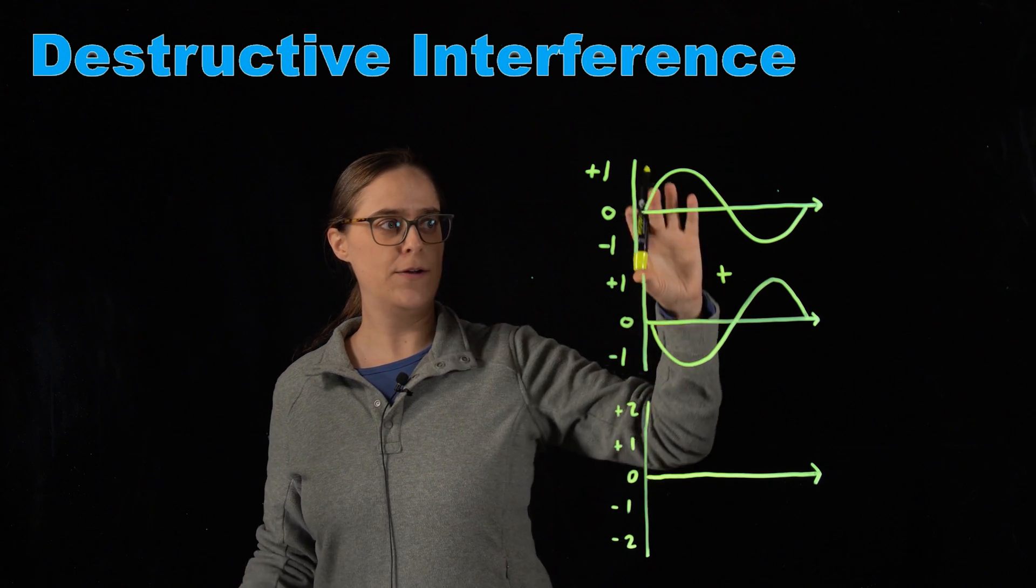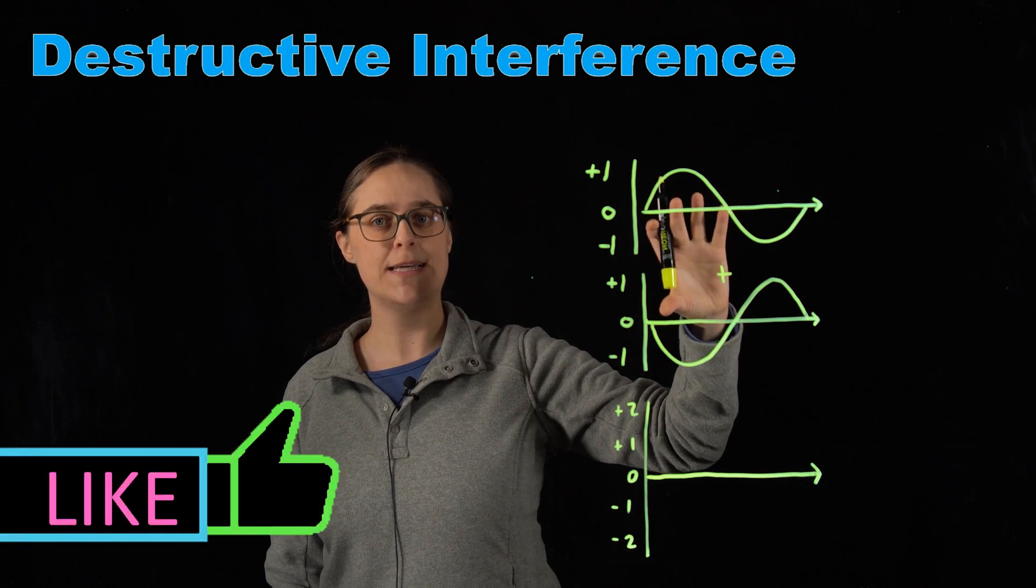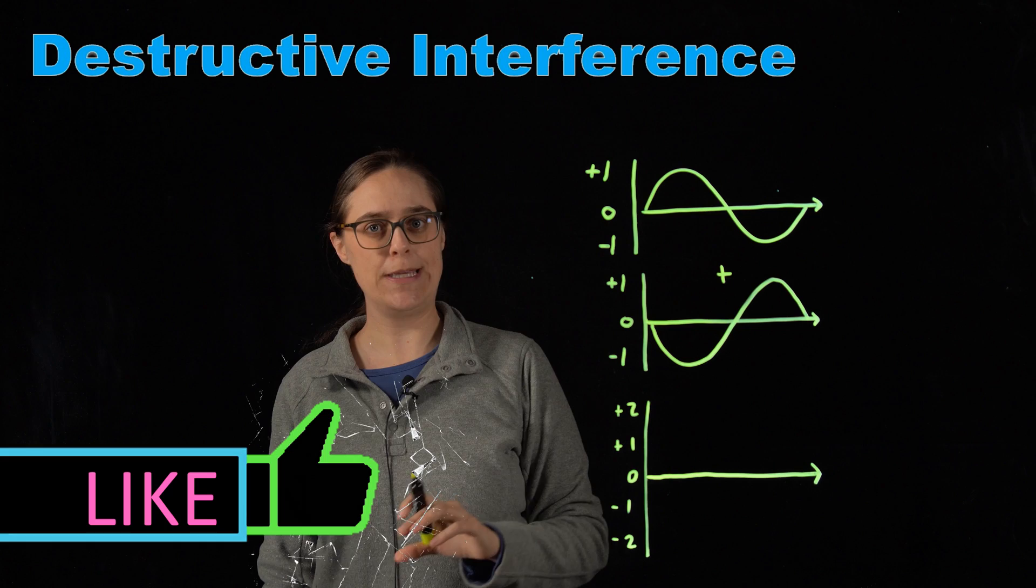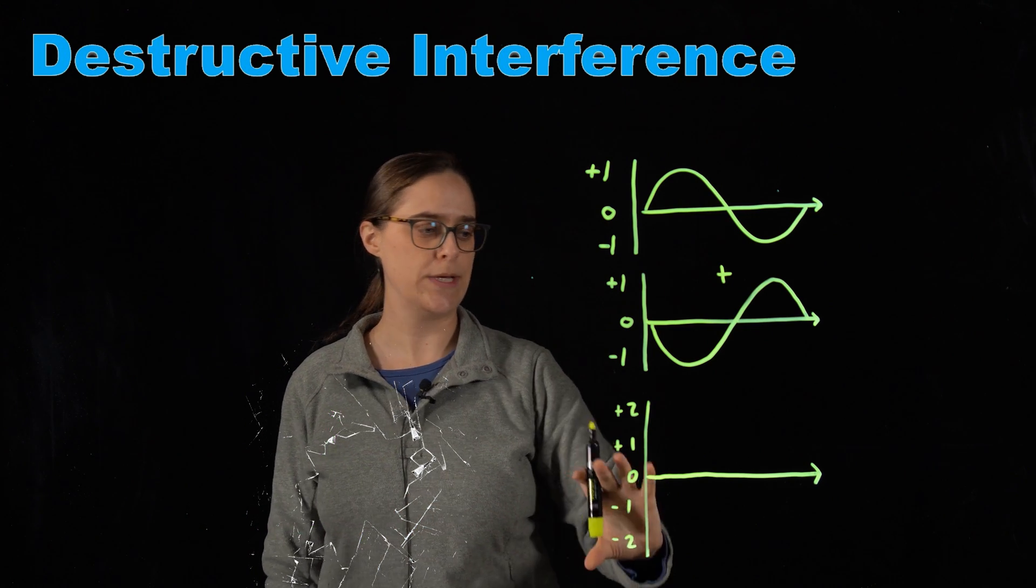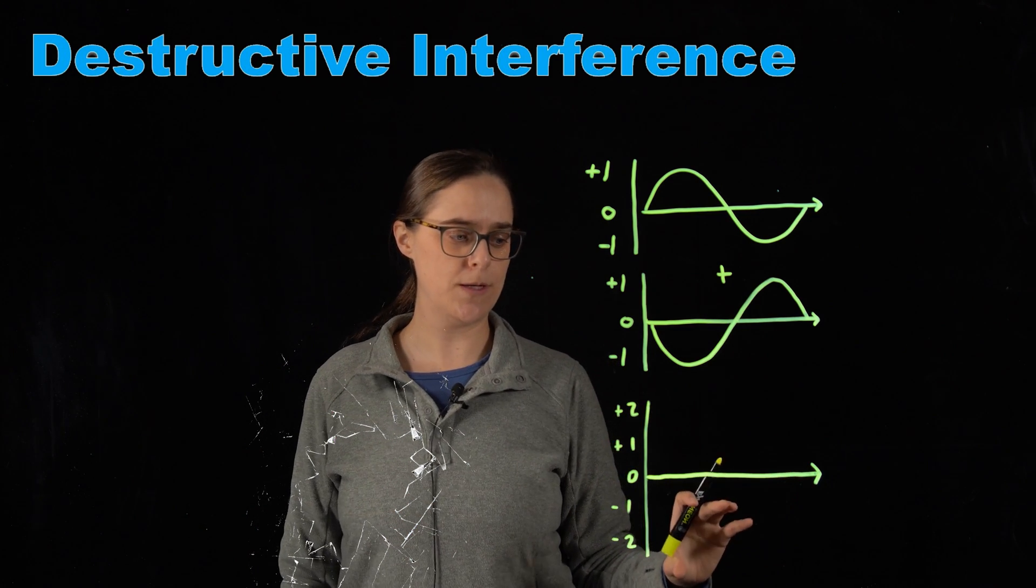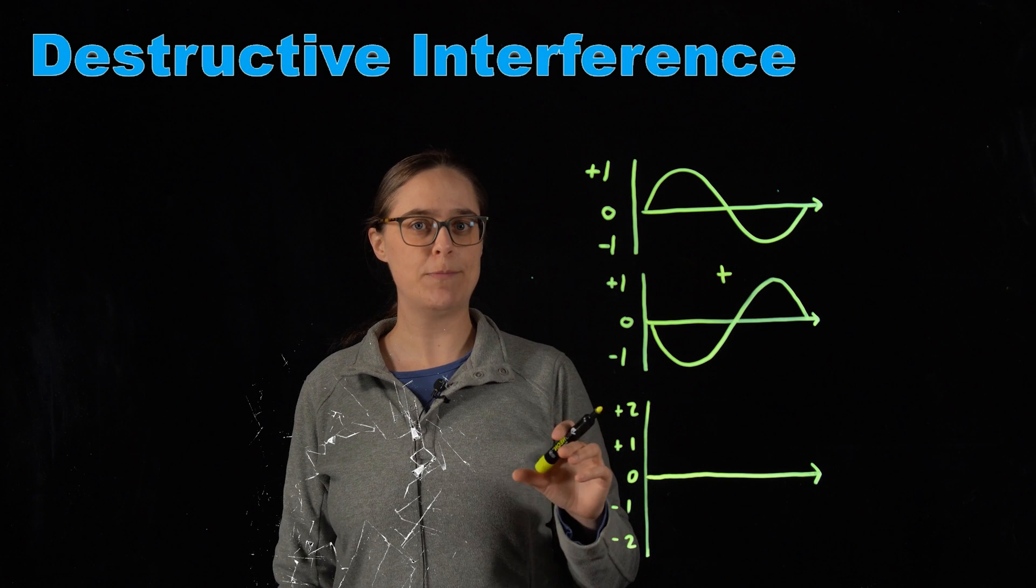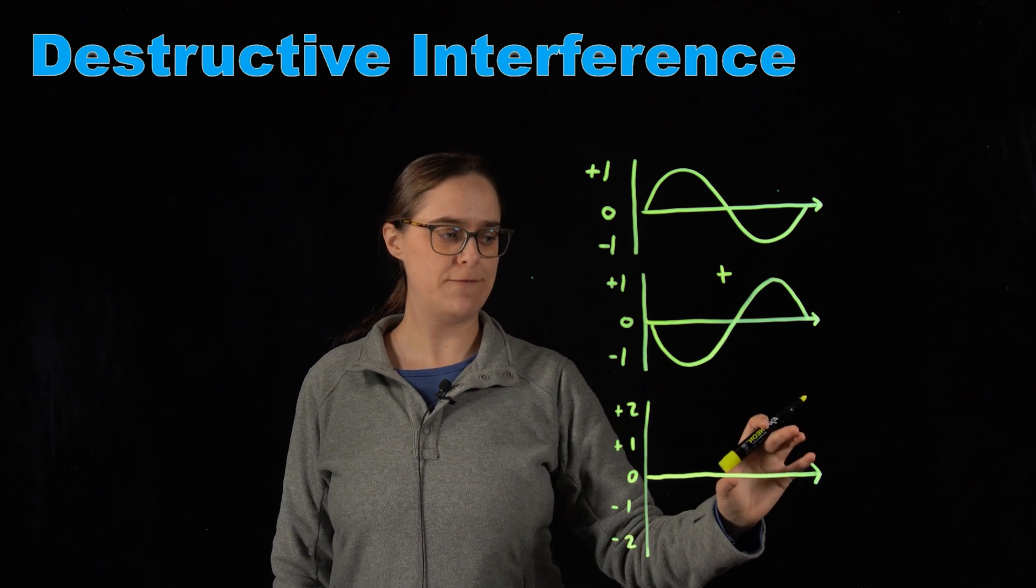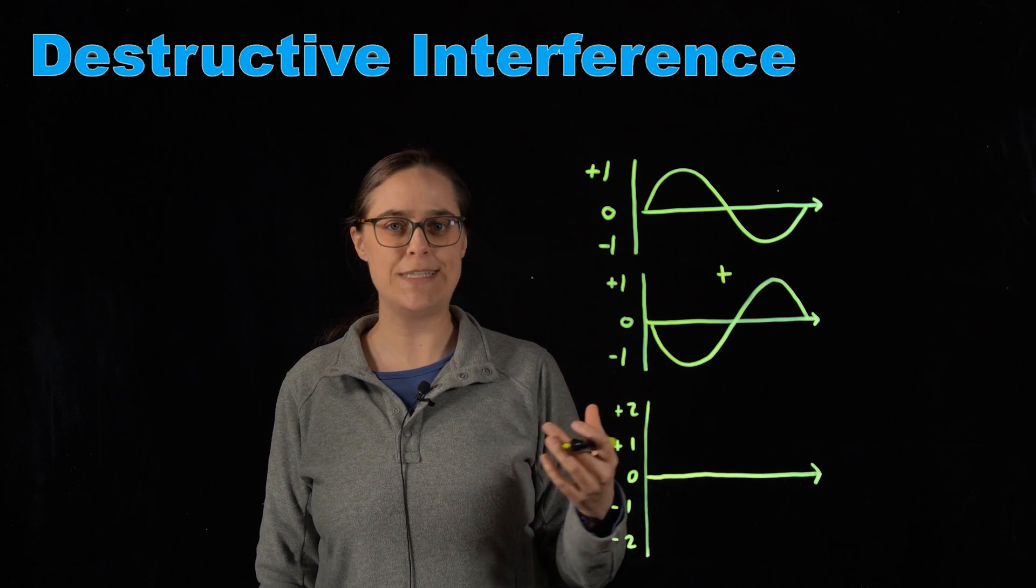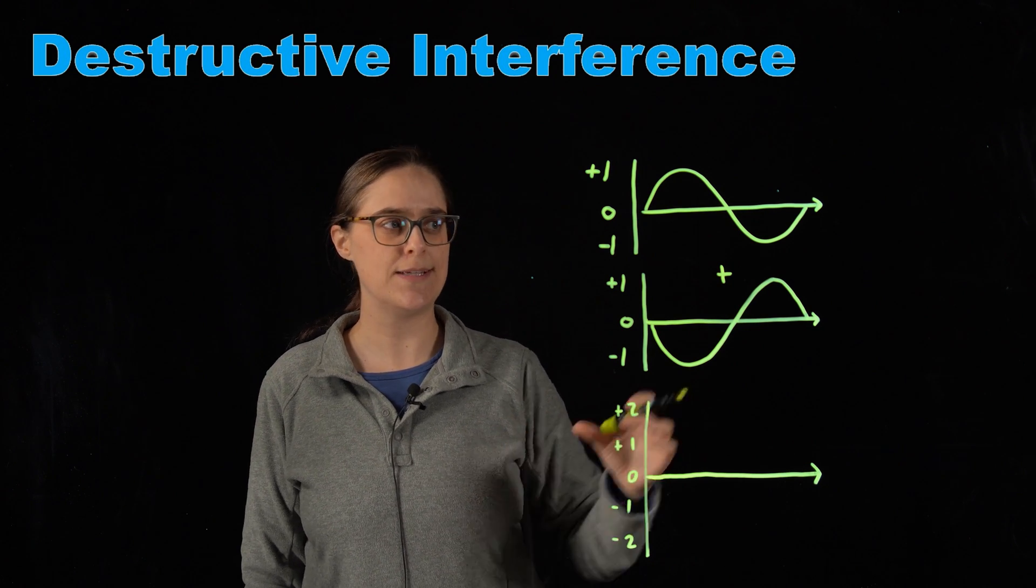What you are seeing here are two waves that are completely destroying each other and canceling each other out. So in our resultant wave at the bottom, you are literally seeing an amplitude of 0. If this was a visible light wave, we would perceive an amplitude of 0 as the absence of light.